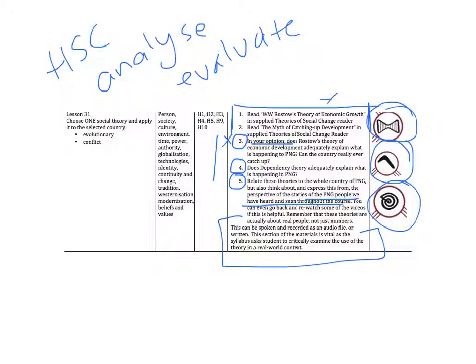So they need to remember that the theories are actually about real people and not just numbers. It's very easy to get caught up in Rostow's economic theory and dependency theory and just see it as a big picture thing.